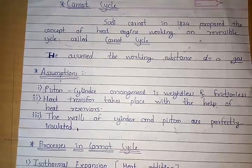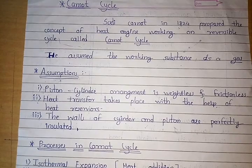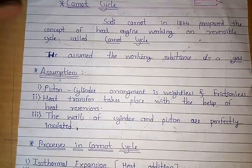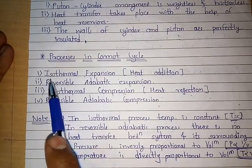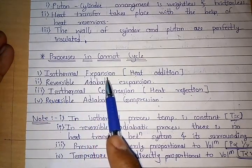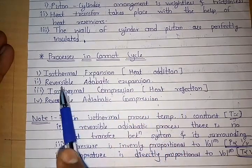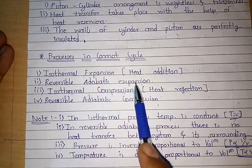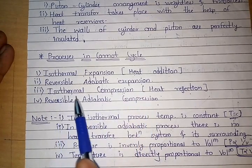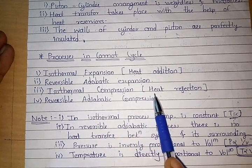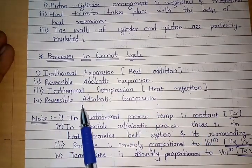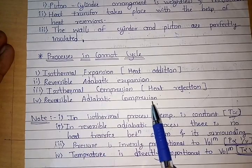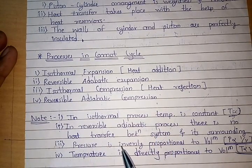In the Carnot cycle, there are four processes involved: two are isothermal processes and two are reversible adiabatic processes. The first process is isothermal expansion, in which heat addition takes place. The second process is reversible adiabatic expansion. The third process is isothermal compression, in which heat rejection is carried out. The fourth and last process is reversible adiabatic compression.